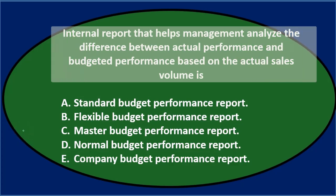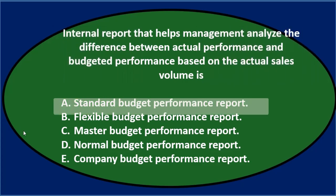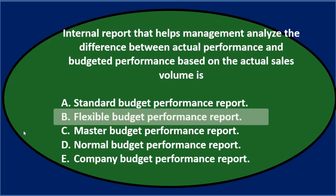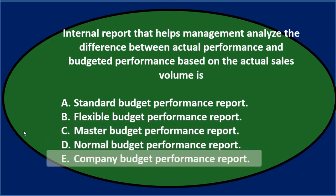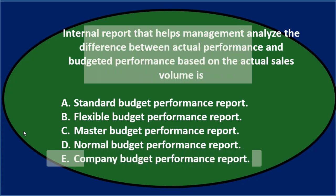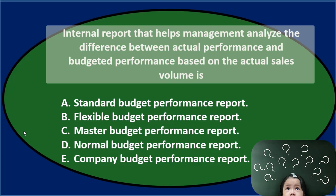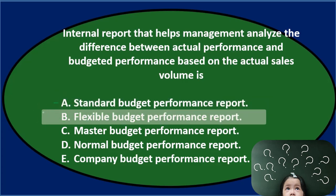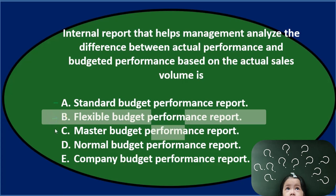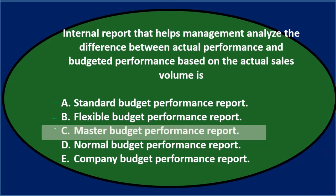Next question: An internal report that helps management analyze the difference between actual performance and budgeted performance based on the actual sales volume is either A, standard budget performance report; B, flexible budget performance report — that sounds kind of reasonable; or C, master budget performance report — that also sounds kind of reasonable.